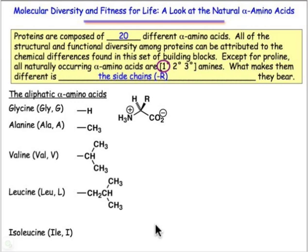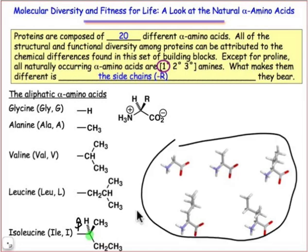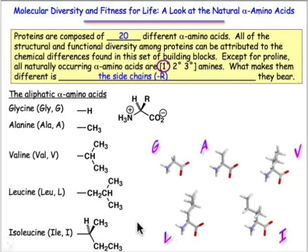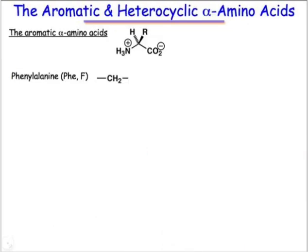It's kind of odd that leucine has an isobutyl group and isoleucine has a sec-butyl group. The sec-butyl group introduces a new stereocenter at the β position, as well as the stereocenter of the L configuration at the α position. The aliphatic amino acids are hydrophobic, bulky, compact, and branched. Nature has selected amino acids ideally suited for packing and space filling — they end up making the dense core of globular proteins, packing together tightly and providing stable, compact protein forms.